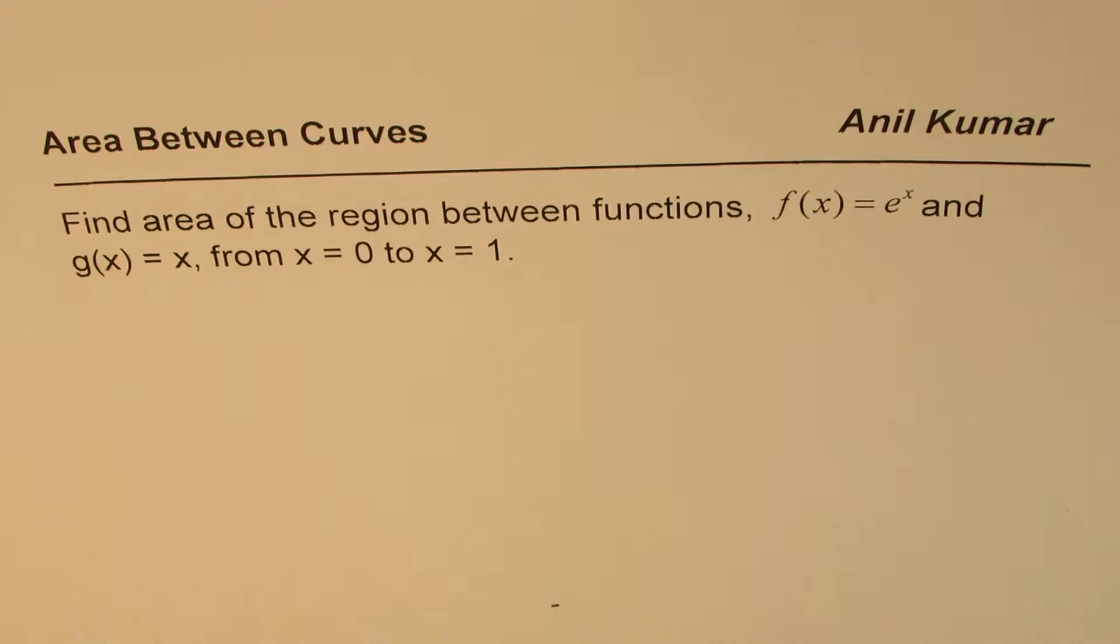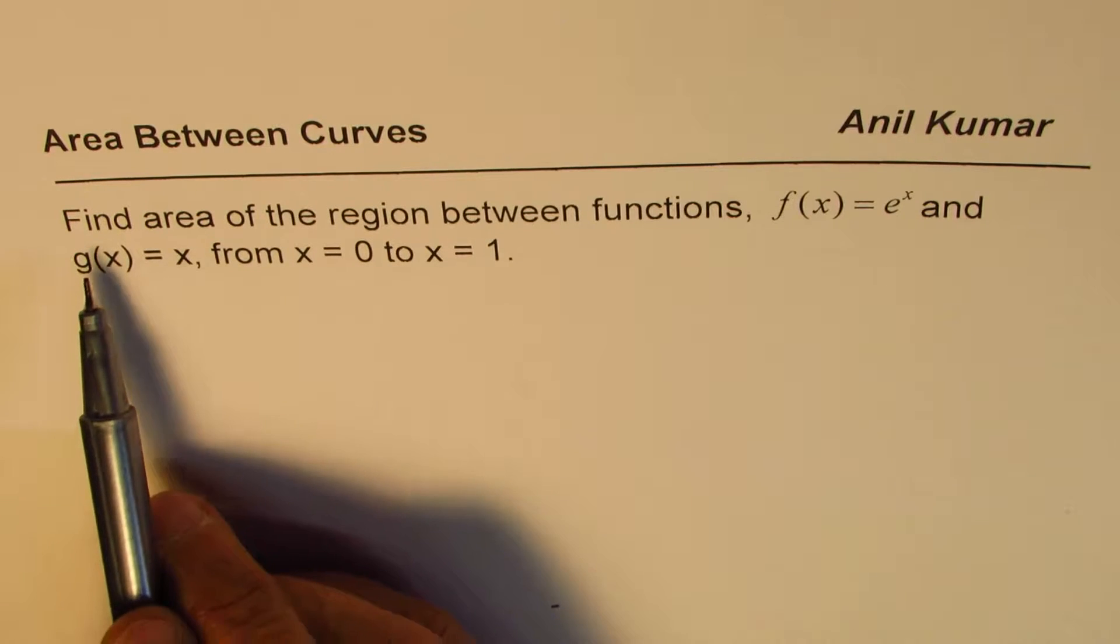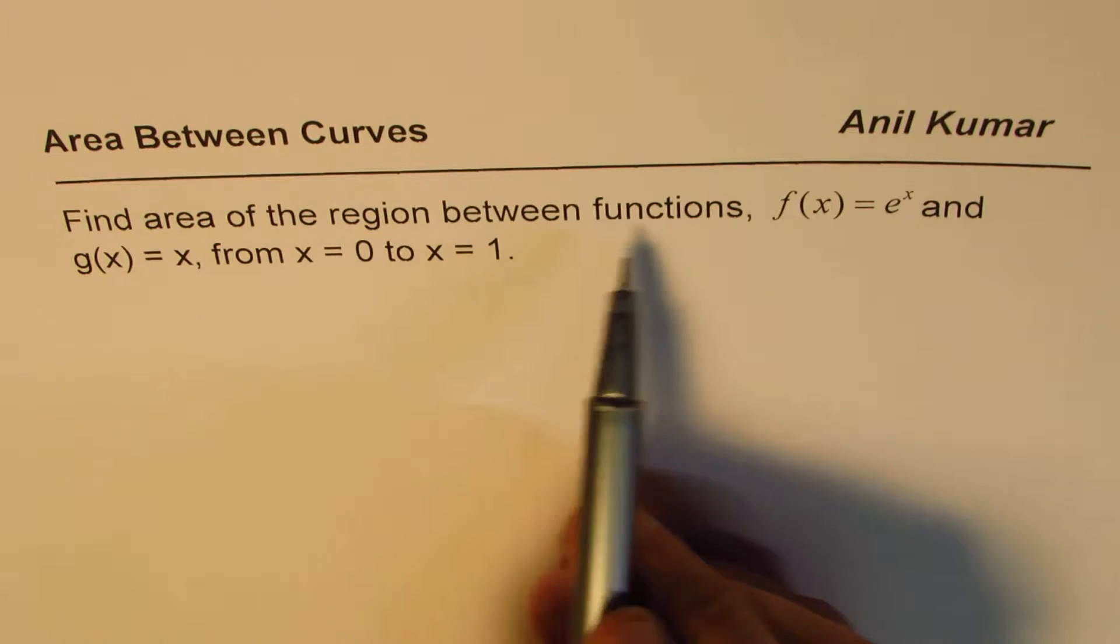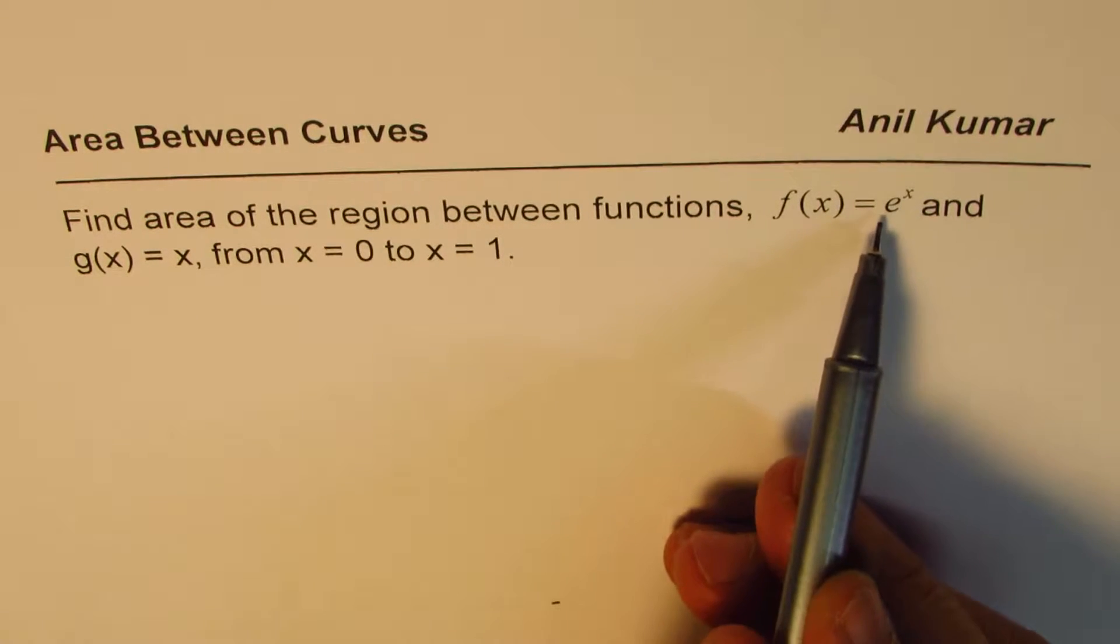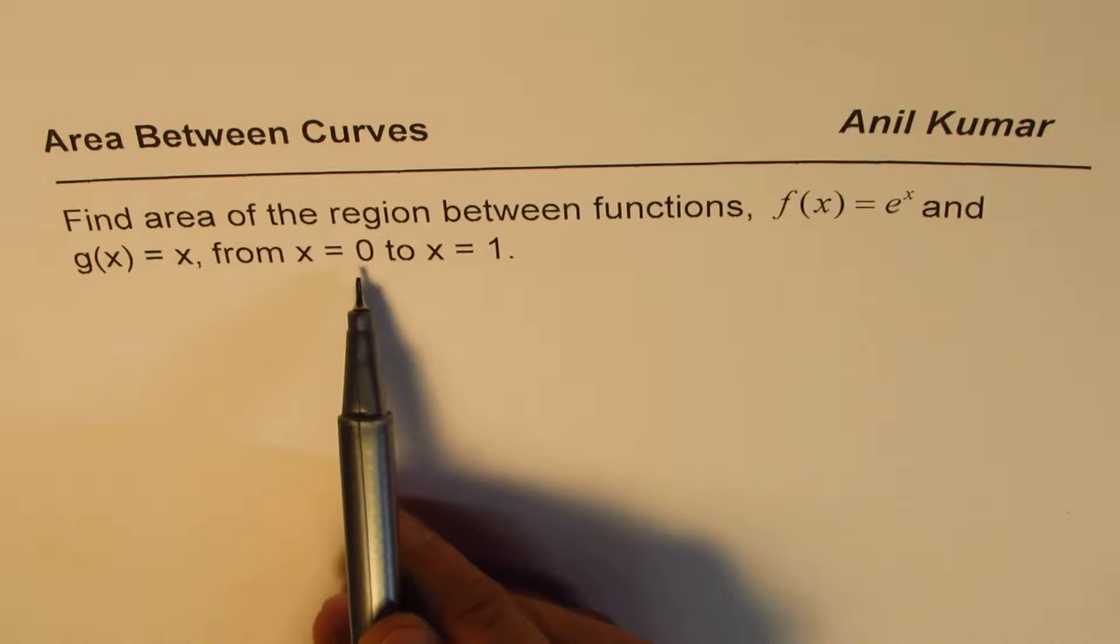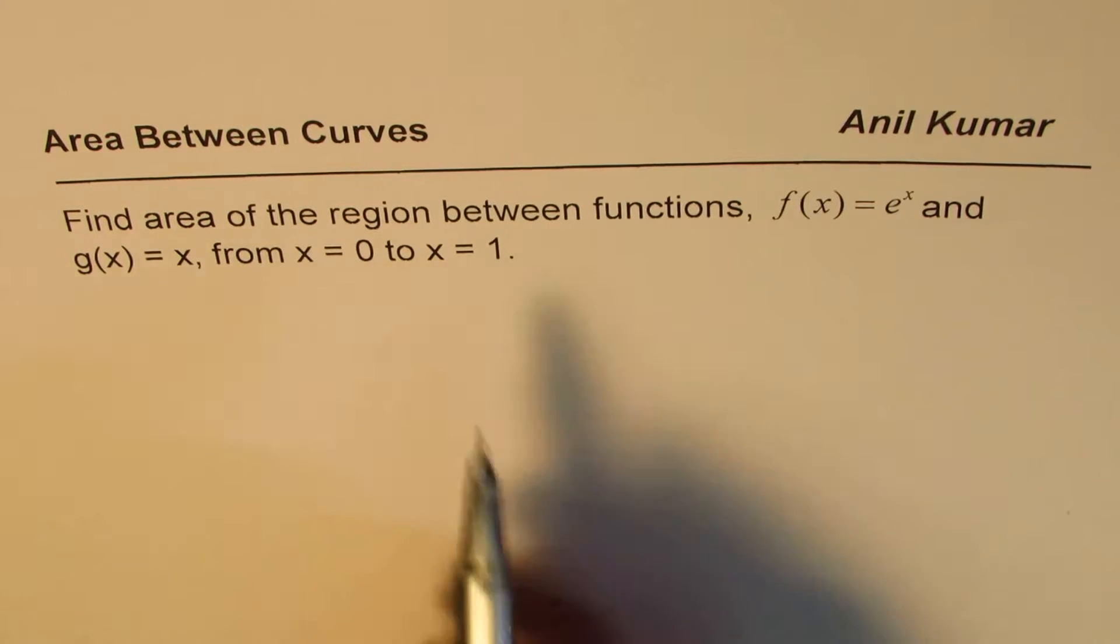In this example, we'll take up exponential function e to the power of x. Find area of the region between the function f of x equals e to the power of x and g of x equals x from x equals 0 to x equals 1.